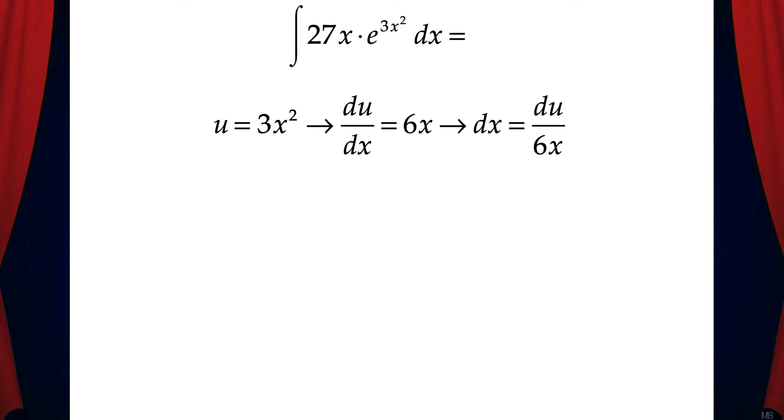Now let's make substitutions so that we can get the integral in terms of u only. We'll substitute u for 3x squared and du over 6x for dx. Now we can cancel out the x's and we're left with the integral of 27 over 6 times e to the u du. Now we can solve and we get 27 over 6 e to the u plus c.